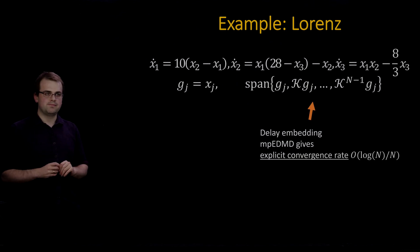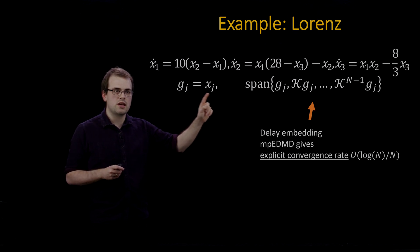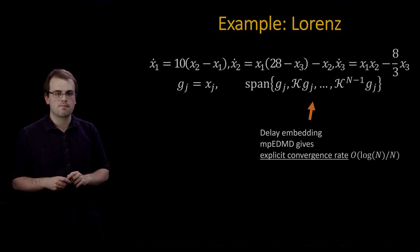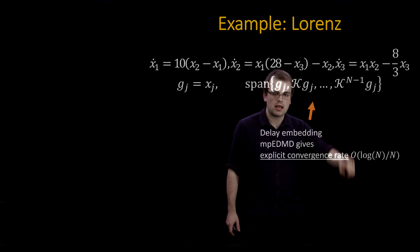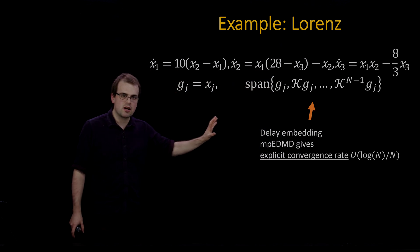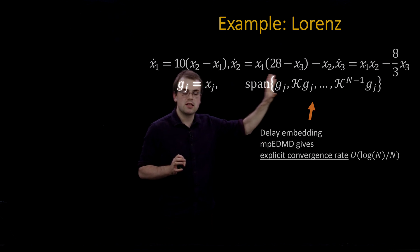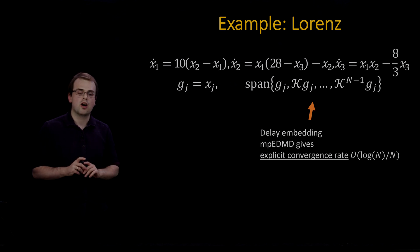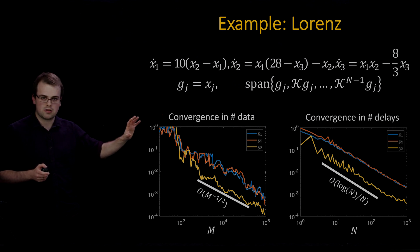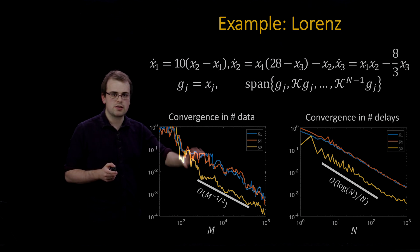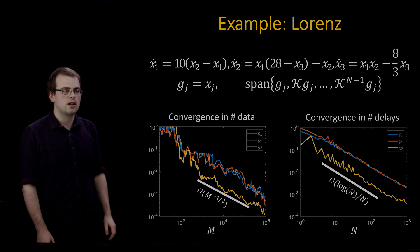Let's look at the Lorenz system for convergence of spectral measures. The observables are the three coordinates X1, X2, X3 with delay embedding: G, KG, up to K^{N-1}G. MPE-DMD gives an explicit convergence rate for delay embedding — the error decays like log(N)/N. Here is convergence in the number of data points for G1, G2, G3 at the expected Monte Carlo rate, and convergence in the number of delays N at the expected rate.